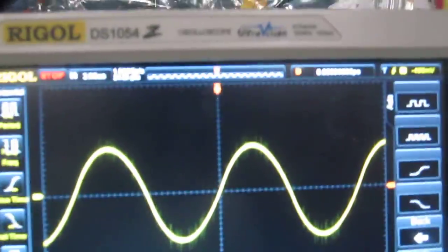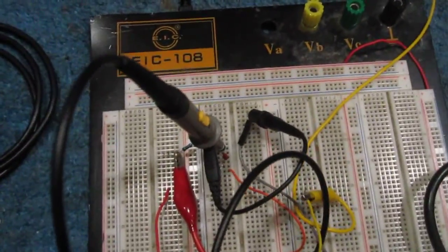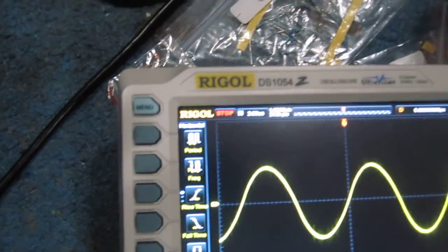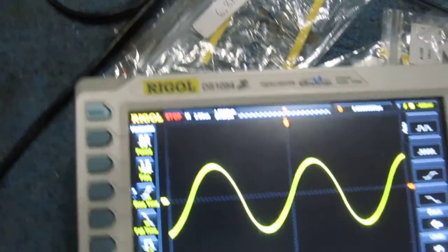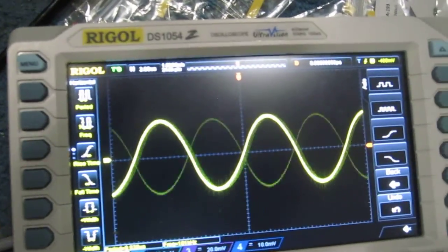Right now you can see on the oscilloscope a sine wave because the oscilloscope probe is at the output. Now I'm going to retrace back so you can see the waveform at the input.